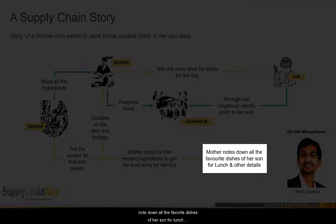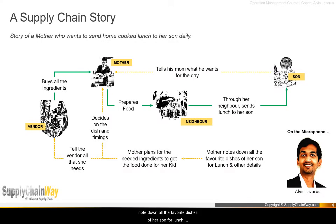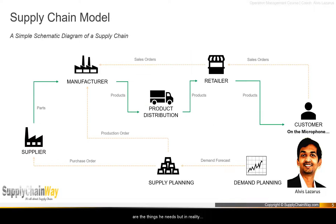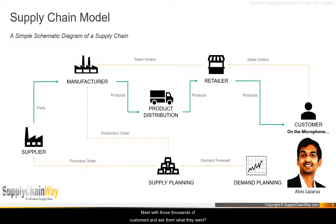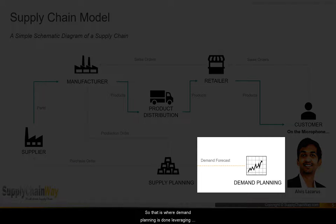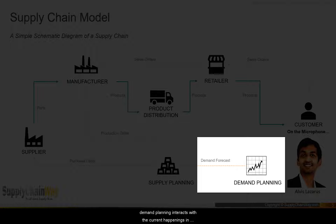In the story, the mother notes down all the favorite dishes of her son for lunch. In reality, if you have hundreds and thousands of customers, it's practically impossible to meet with each of them and ask what they want. That is where demand planning comes in — leveraging your history of past sales as the first input, and using market research to interact closely with current happenings in the market.